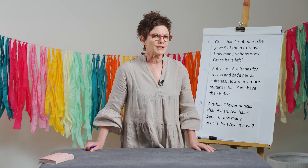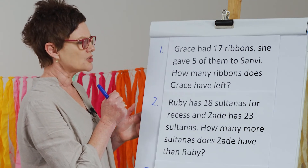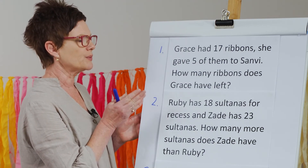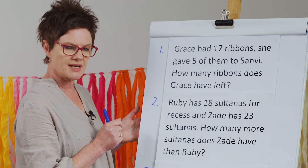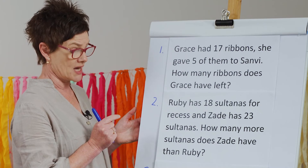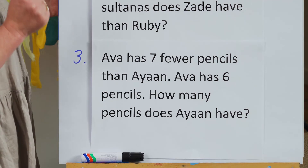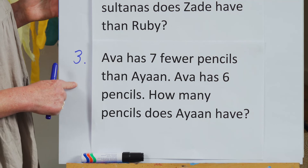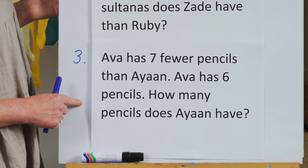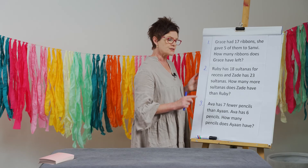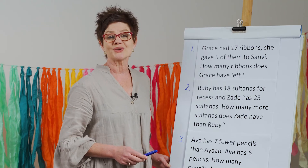Great listening. Now let's get to the doing task. Number one: Grace had 17 ribbons. She gave five of them to Sanvi. How many ribbons does Grace have left? Number two: Ruby has 18 sultanas for recess and Zaid has 23 sultanas. How many more sultanas does Zaid have than Ruby? And the last doing task: Ava has seven fewer pencils than Ayaan. Ava has six pencils. How many pencils does Ayaan have? Don't forget to use our bar model and have a think about subtraction as difference. Have a go and I'll see you when you're finished.